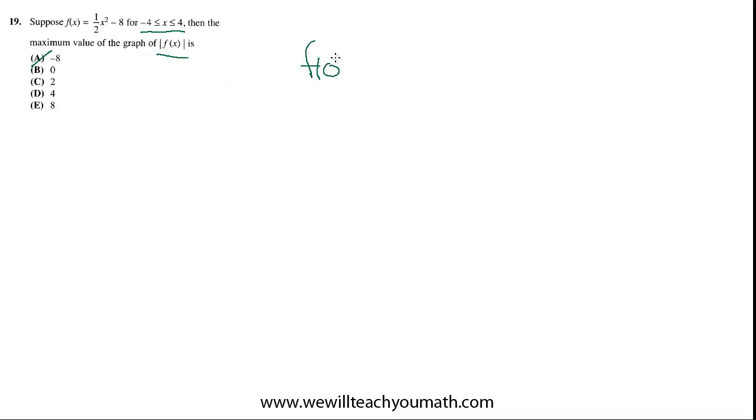f of 0 is 1 half 0 squared minus 8. And this whole thing is 0. So this just equals negative 8. So the absolute value of f of 0 is going to be positive 8. And that's a choice. So I think E is going to be the best answer. And there's no way to really beat that.